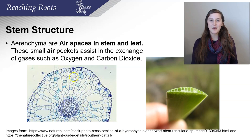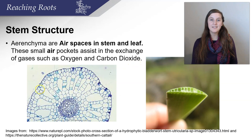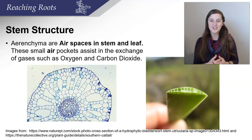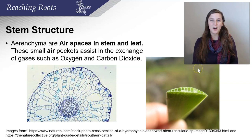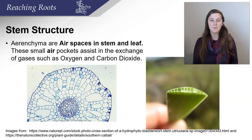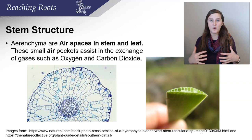Cattails have aerenchyma in their stem structure. Aerenchyma are air spaces in the stem and leaf — small air pockets that assist in the exchange of gases such as oxygen and carbon dioxide. In this cross section of a leaf and a stem, you can see there are actually holes that act as vents for oxygen and carbon dioxide exchange. These vents, called aerenchyma, allow these plants to successfully grow in waterlogged areas, pumping oxygen down into the root system so the plant can still carry out important biological processes for life.